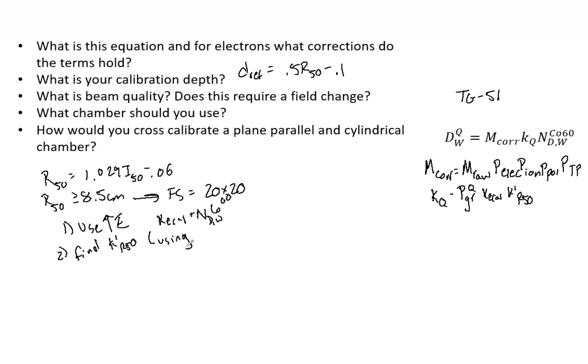That is just going to do using R-50. And then next, we want to cross-calibrate at D-ref using a cylindrical chamber. The calibration is equal to the dose measured with the cylindrical chamber divided by the plane parallel chamber's reading times K-prime R-50.